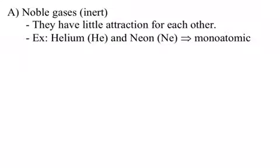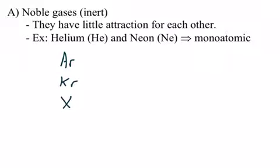I'm going to divide gases into three categories. The noble gases — if I had to choose — would be the group of gases that behave the most like an ideal gas. They're in the last group of the periodic table. I've listed helium and neon here, but you also have argon, krypton, xenon, and radon. Noble gases, because they are inert, because they don't attract, are the ones that behave the most like an ideal gas.